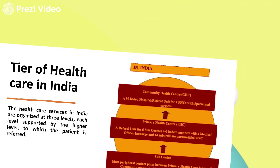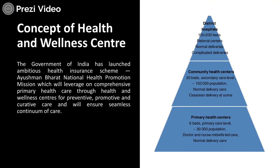Talking about health and wellness centers, primary health centers look after provisional care at the primary health level, catering to the needs of about 30,000 population areas. The Government of India launched the Ayushman Bharat National Health Promotion Mission, targeted at improving the healthcare system and promoting wellness in primary health centers through a preventive, promotive, and curative approach. The mission focused on creating awareness among people in rural areas regarding sanitation and clean water, so that preventive care is taken.